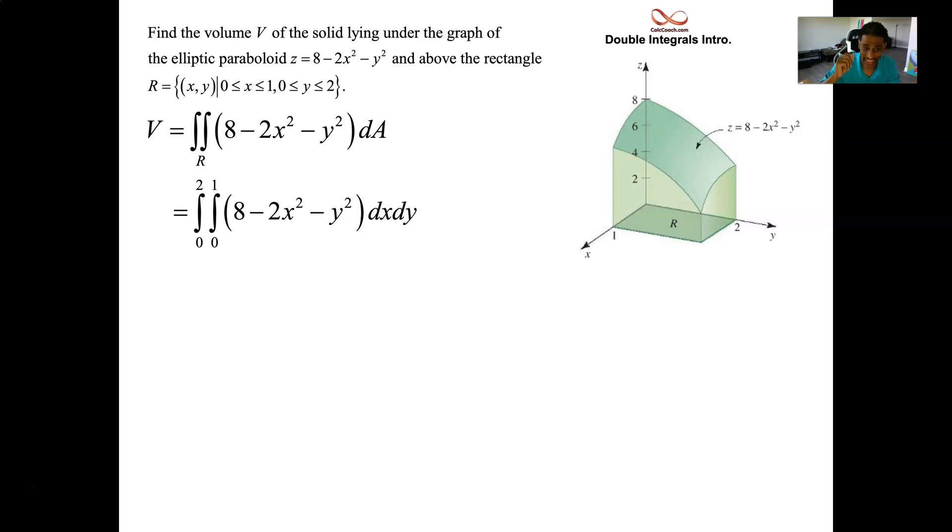Antiderivative with respect to x. Because it's the inside. Holding y constant. Treating the y like you treat the eight. The antiderivative of eight with respect to x is eight x. Antiderivative of negative two x squared with respect to x is negative two x cubed over three.